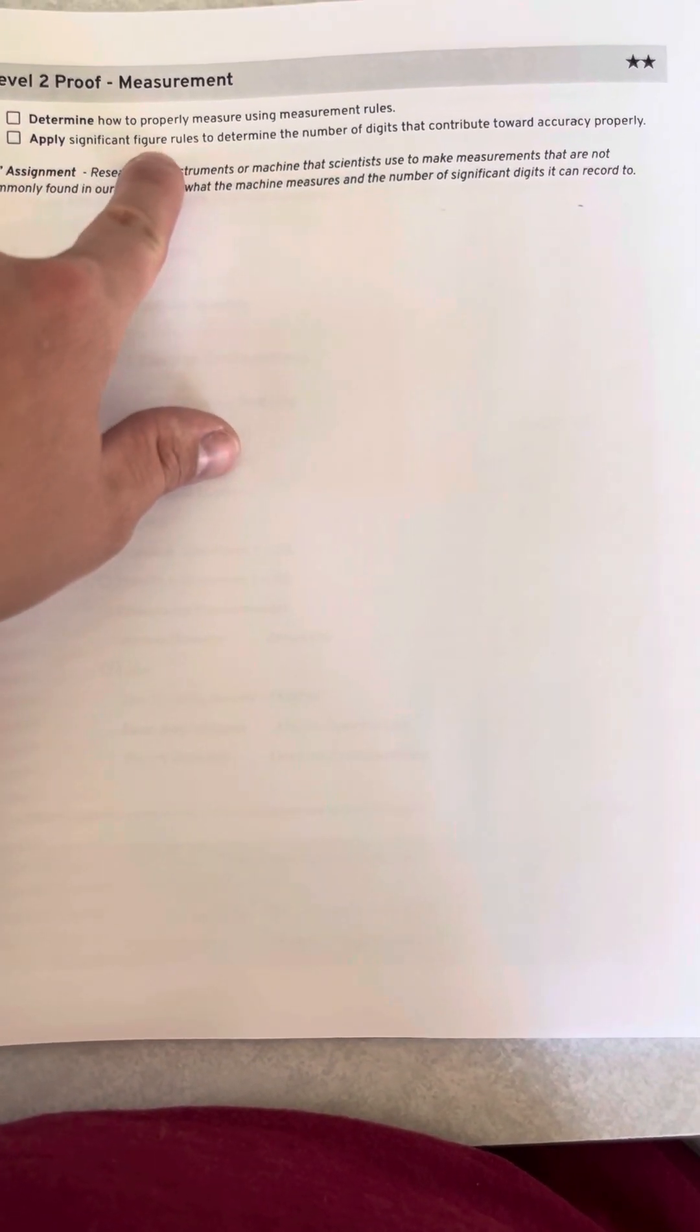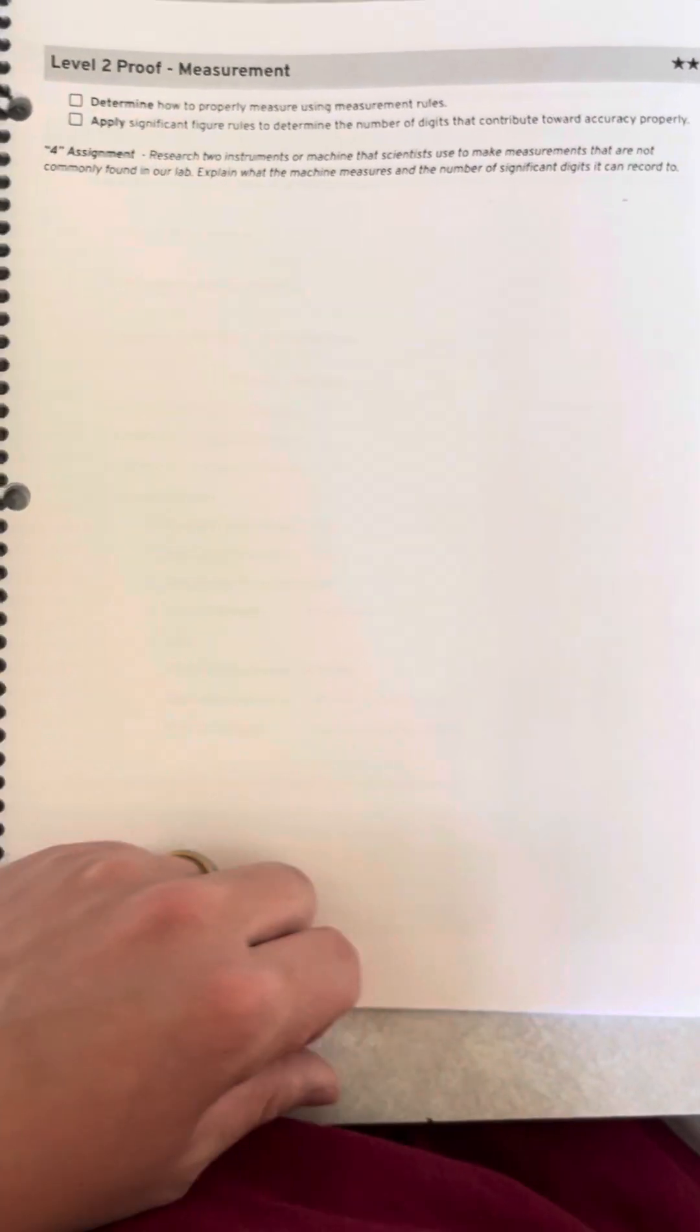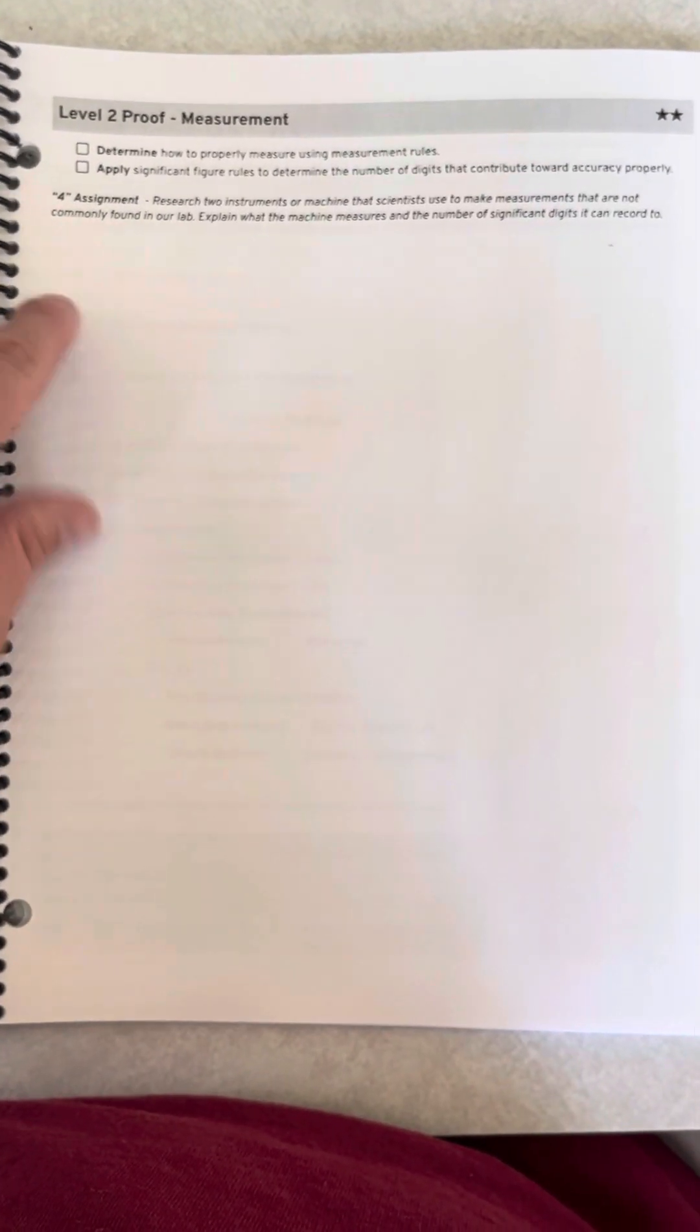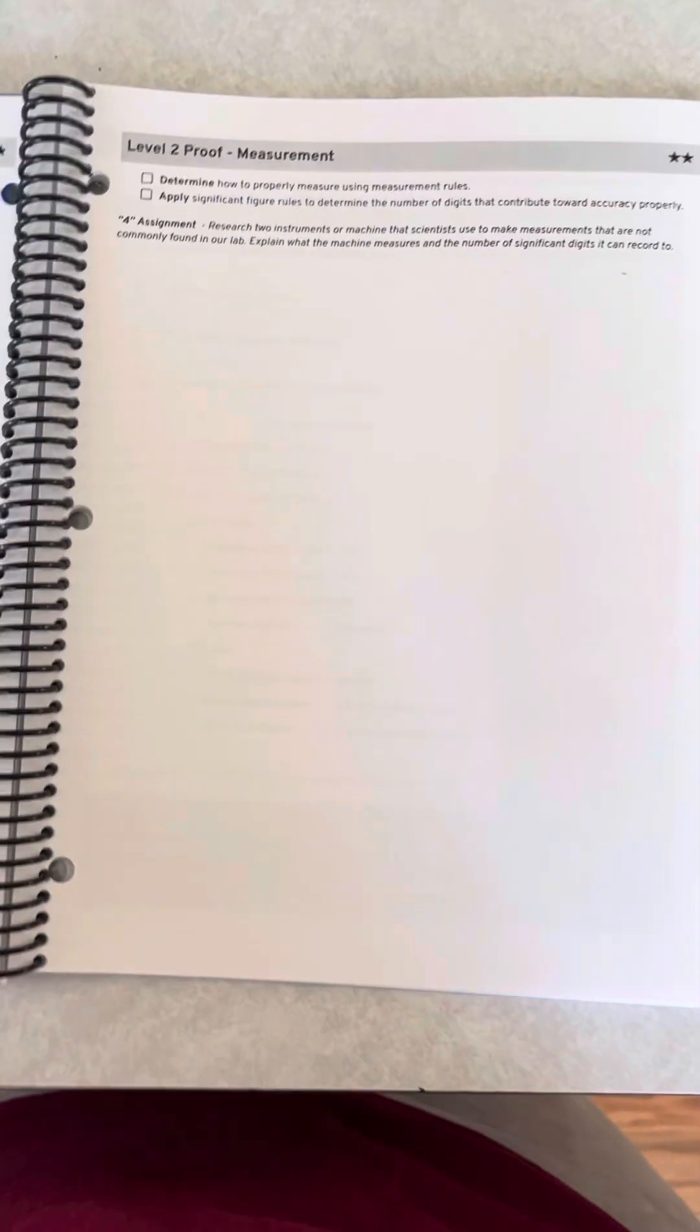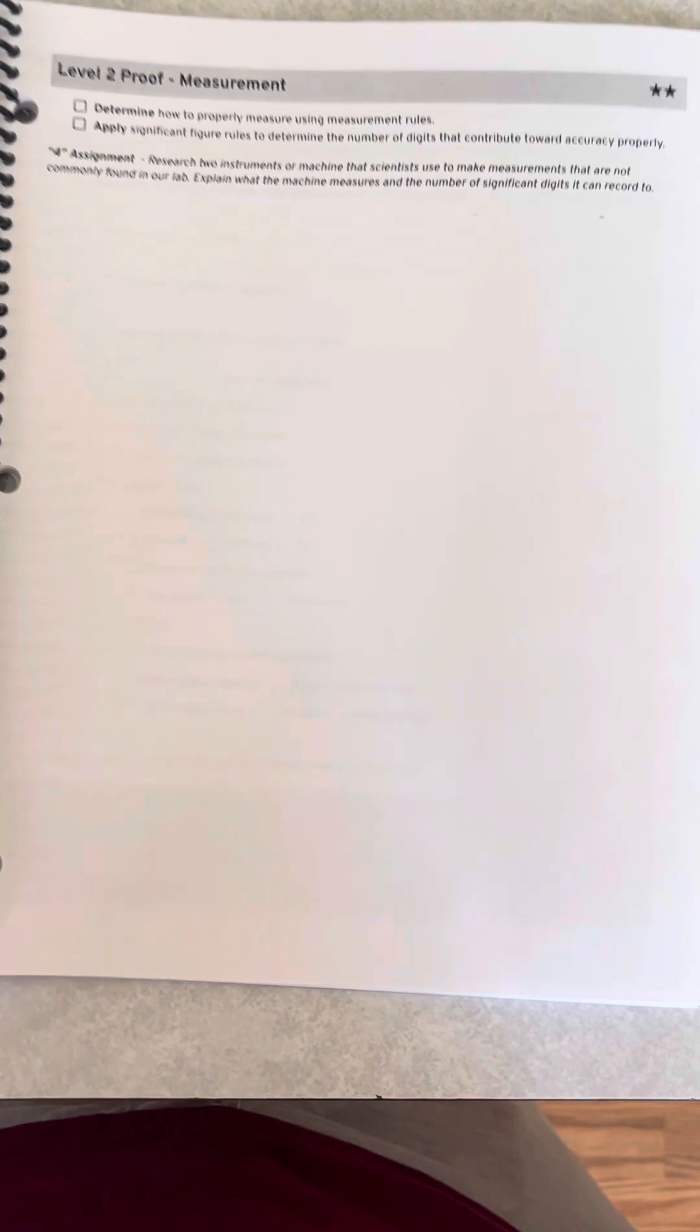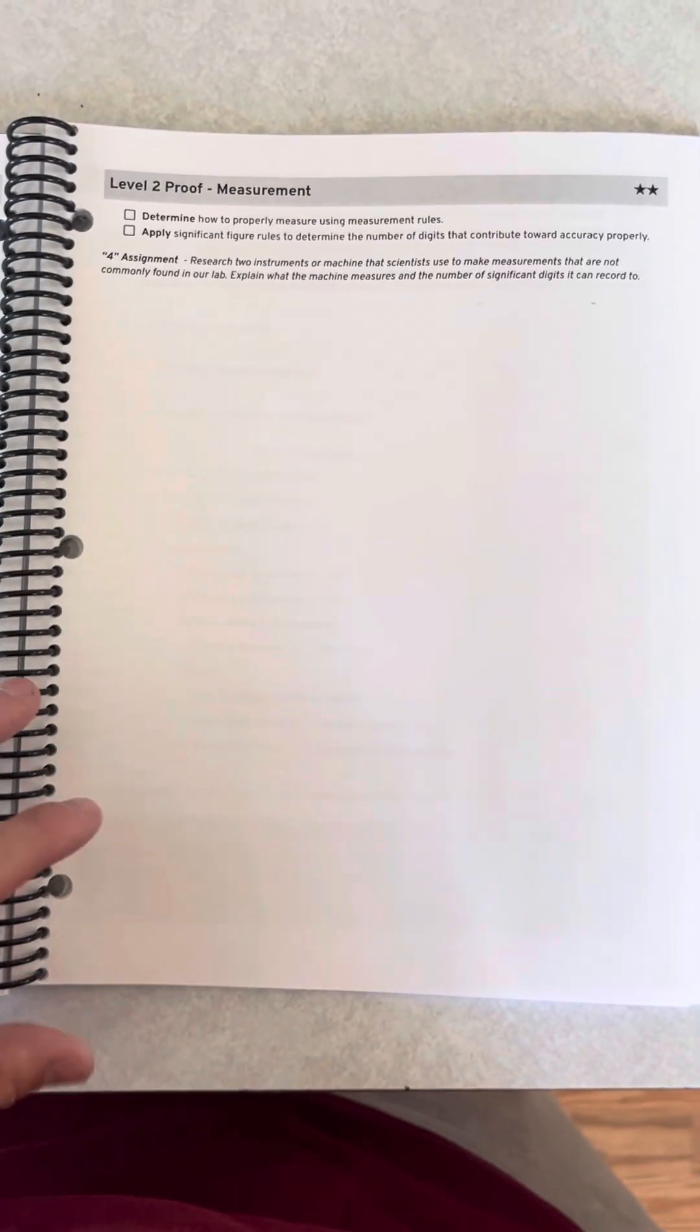And they're also going to, how I can apply significant figure rules to determine the number of digits that contribute toward accuracy. And they're going to draw that as well. If they want a four, they can fit it on here or they can do it on a separate piece of paper. So the proofs are nice because it shows me what they're thinking and how they organize their work shows me how well they're putting their thoughts together. Because if it's all over the place, then I'll tell them like, hey, you're not very good at organizing your thoughts. Let's see if we can try better.